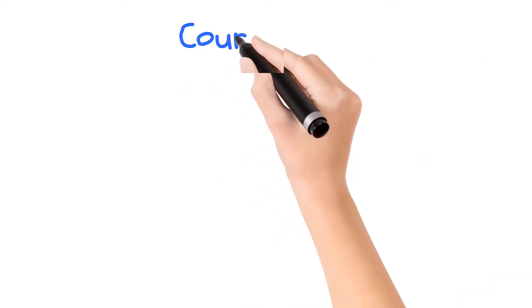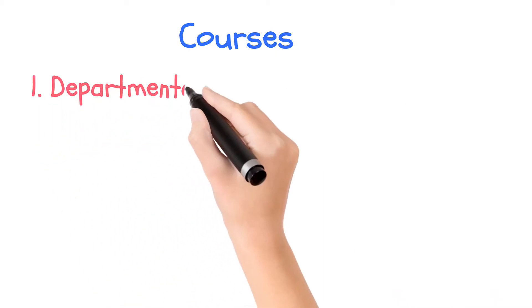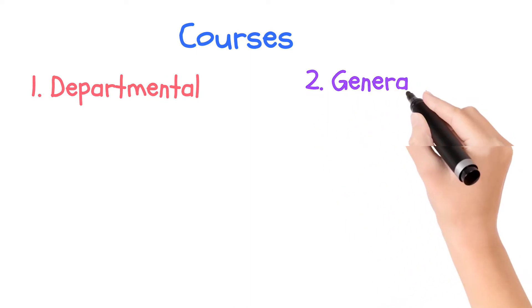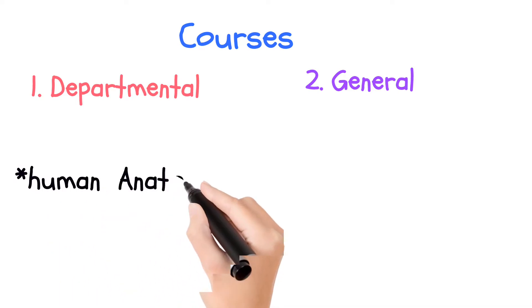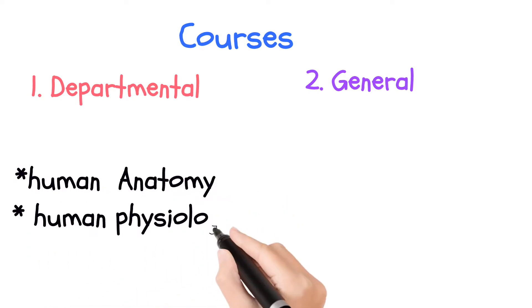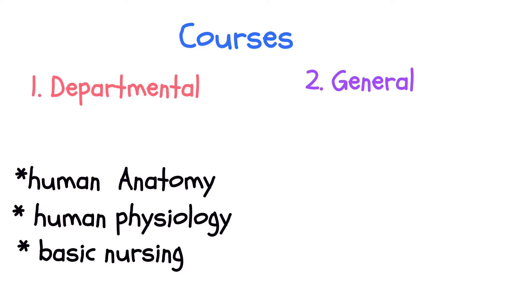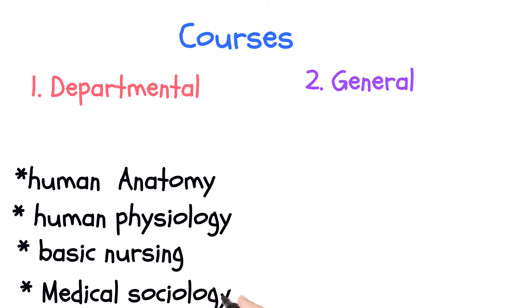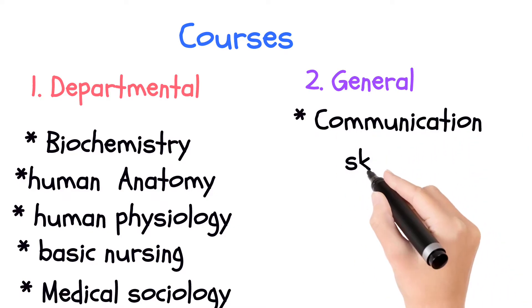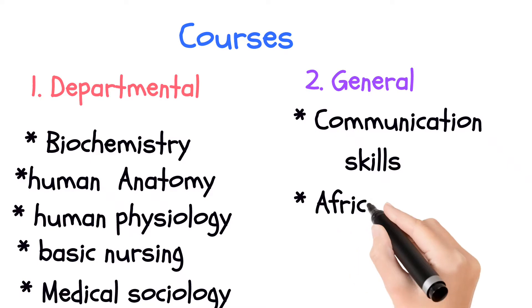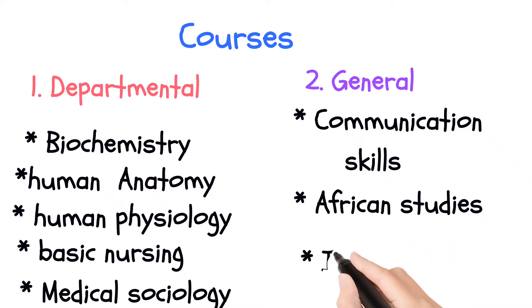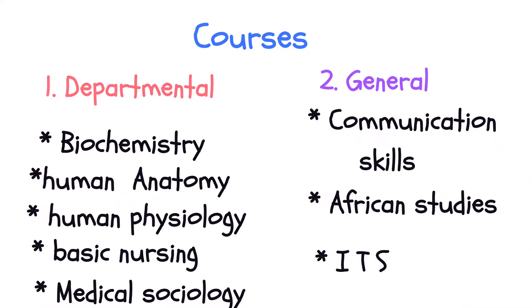There are two types of courses that you want to take as a PA student in a university. First, we got departmental courses and second, we got general courses. The departmental courses are Human Anatomy, Human Physiology, Basic Nursing, Medical Sociology, and Biochemistry. The general courses are Communication Skills, African Studies, and Information Technology Skills.